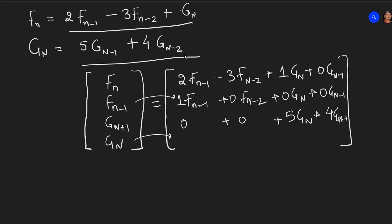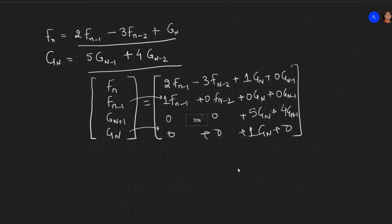And the last one, since it is Gn, it will just be Gn plus 0, 0, 0. So we have written it, re-written it. Now let us break it down into two matrices.